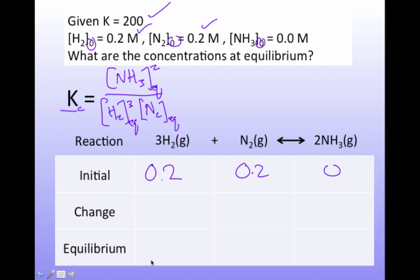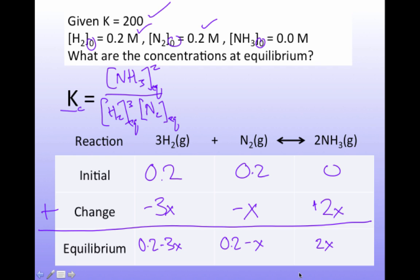And then I can think about my change. And again, I get to choose. I can make it anything I want, but I am choosing to make it minus X. And then based on that, I now know the other changes. This one has to be three times as large and in the same direction. If nitrogen is going down in concentration, hydrogen is going down in concentration. And then ammonia is going up in concentration. And then equilibrium, I just add my initial and my change. So I get 0.2 minus 3X, 0.2 minus X, and 0 plus 2X is 2X.